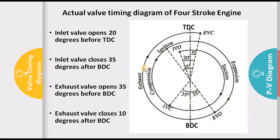The exhaust stroke spans from 35 degrees before BDC to 10 degrees after TDC, which is 35 plus 10 — that is 45 degrees in addition to the base 90 degrees. So theoretically it was 90 degrees, and additionally we have 45 degrees for the exhaust stroke. Now, the second cycle has already started 20 degrees before TDC — the inlet valve has already opened before the piston reaches TDC. This means that for 20 degrees plus 10 degrees, that is a 30-degree period, both the inlet valve and the exhaust valve remain open simultaneously. This is what we call valve overlap.